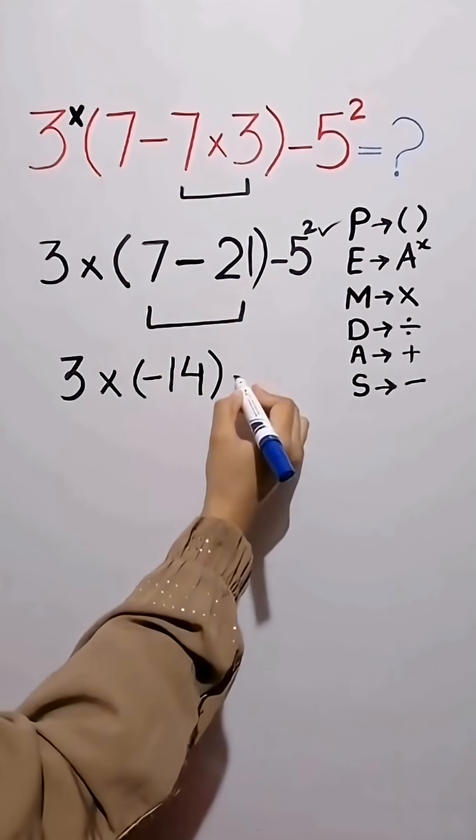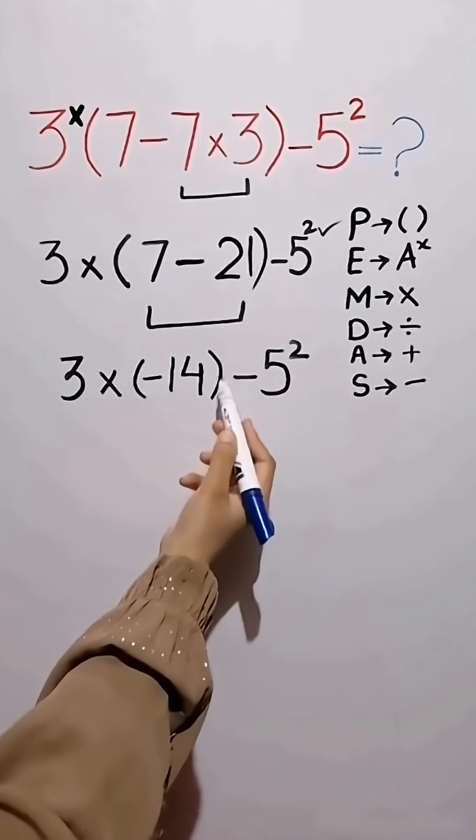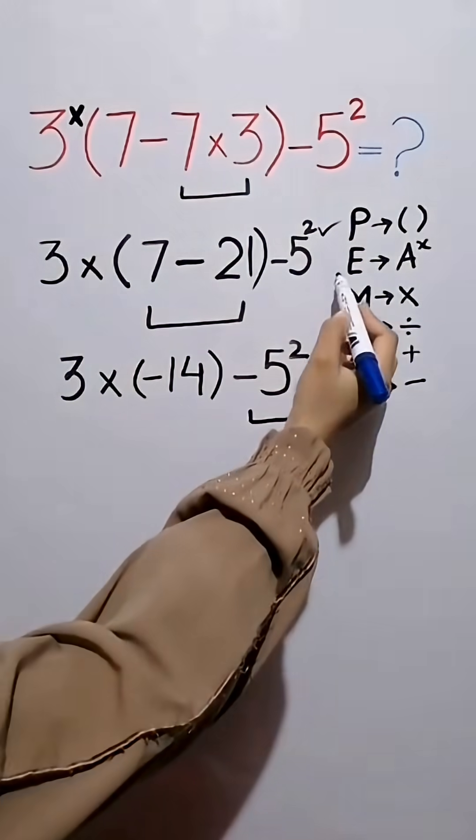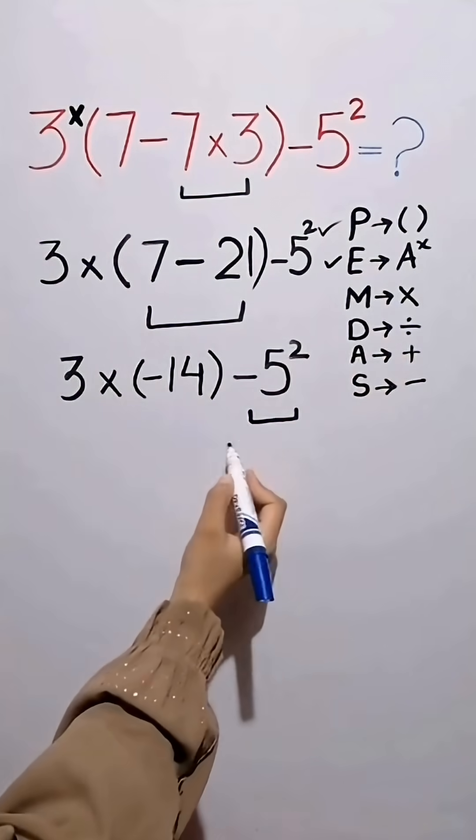Then minus 5 square as it is. Okay guys, now we have multiplication, subtraction and exponent. First we simplify this exponent, because after parenthesis exponent has a higher priority than the other operations.